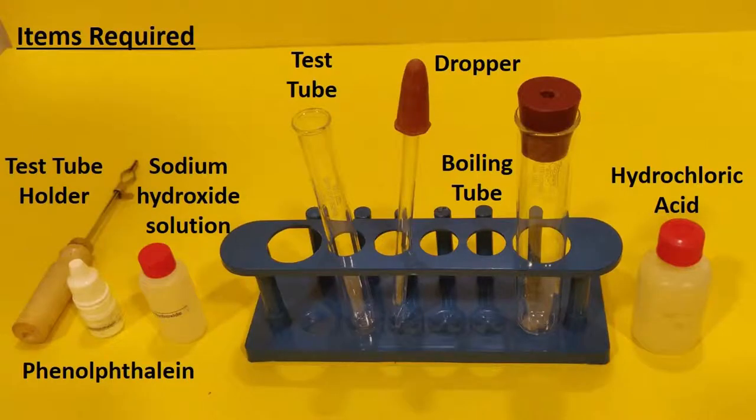For this experiment, we will need a test tube and test tube holder, phenolphthalein indicator, sodium hydroxide solution, hydrochloric acid, a dropper, and a boiling tube. Additionally, we will also require pH paper.